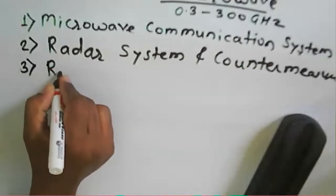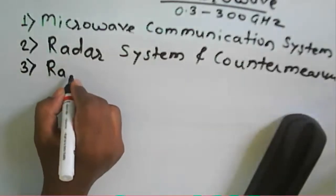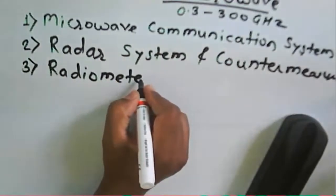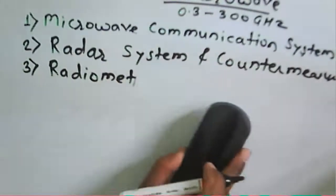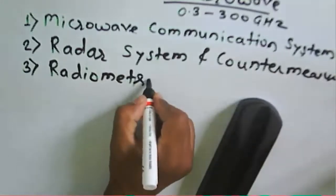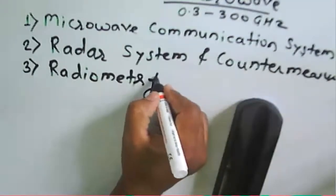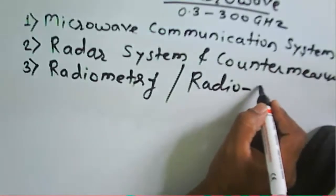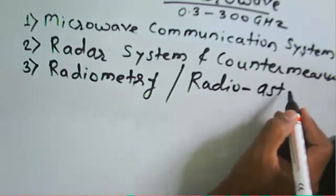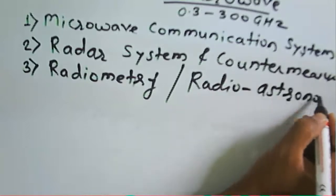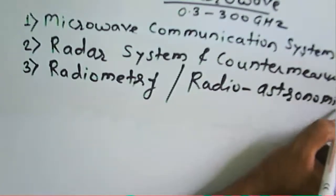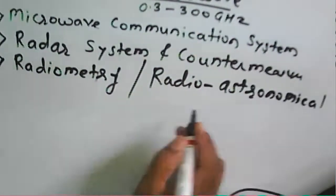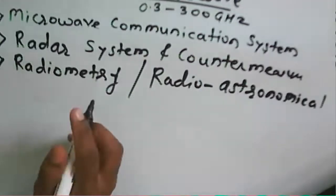The next application is radiometry, also called radio astronomical research. Radiometry involves observing objects in a given space to map them and determine their size by transmitting a microwave signal.